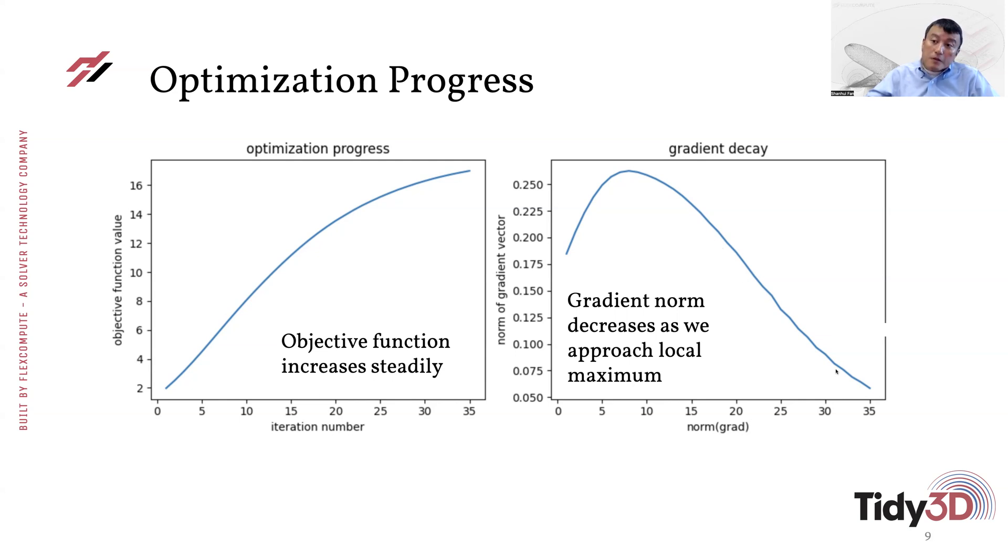And this is reasonable because we are trying to approach a local optimum of the objective function. And as you approach the local optimum, you should expect that the gradient starts to decrease. So in fact, both of these plots give you an indication that the gradient optimization process is behaving exactly the way that we would expect them to behave.